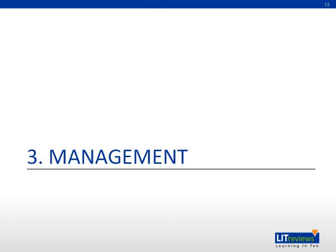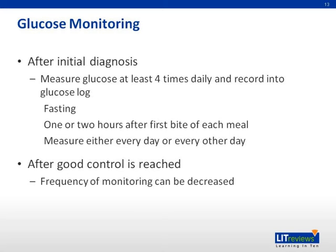Finally, we'll talk about the management of GDM. After initial diagnosis, ACOG recommends tight glucose monitoring — at least four times daily, recorded in a glucose log. This consists of a fasting measurement and postprandial measurements one or two hours after the first bite of each meal, done either every day or every other day. After good control is reached, the frequency of monitoring can be decreased.